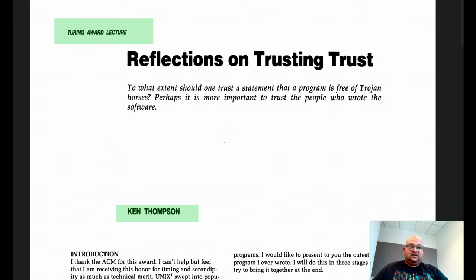This paper is actually a transcription of his Turing Award lecture. Now, Thompson chooses to not talk about Unix in his acceptance lecture, but instead address the issue of how can we tell if a program is free of Trojan horses? Now, what does he mean by a Trojan horse?